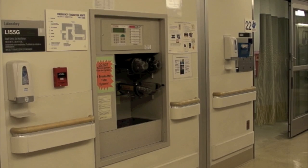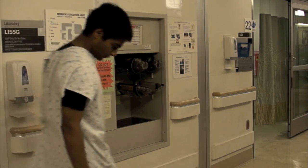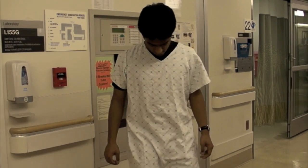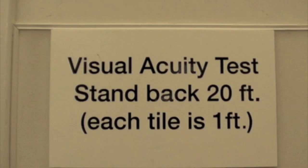To start out, position the patient to stand 20 feet away from the Snellen chart. Many EDs will have the 20-foot distance from the chart marked on the floor. If not, some tiles are 1 square foot, so you can count 20 tiles to approximate 20 feet.